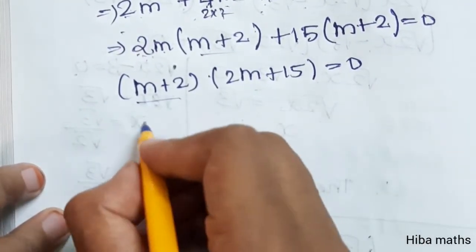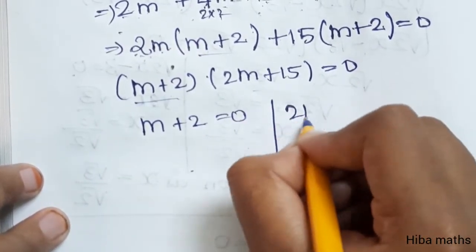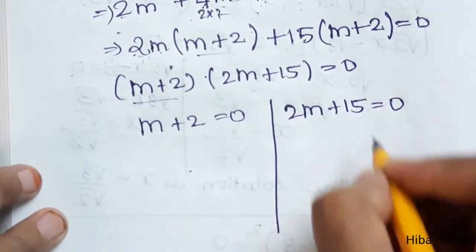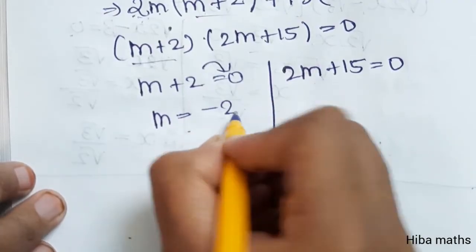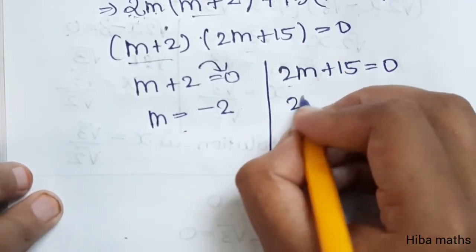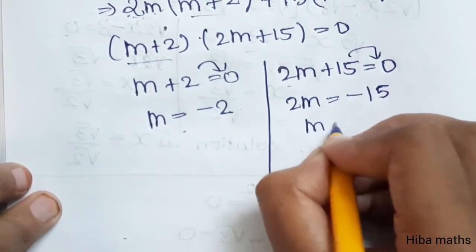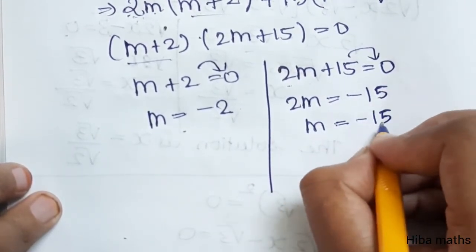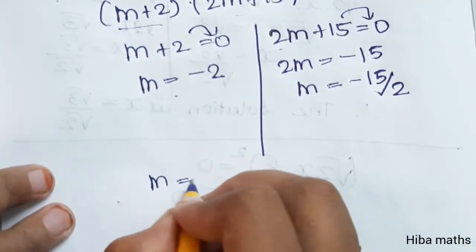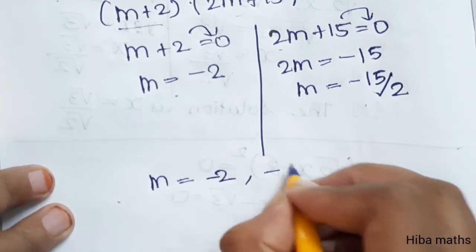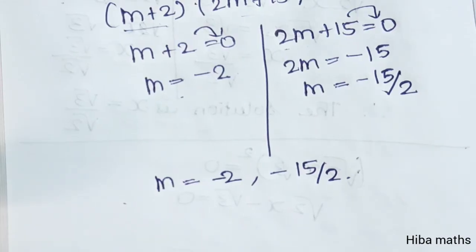These two factors are each equal to 0. So m plus 2 equals 0 gives m equals minus 2, and 2m plus 15 equals 0 gives 2m equals minus 15, so m equals minus 15 divided by 2. Therefore m equals minus 2 or minus 15 over 2. Thank you so much for watching.